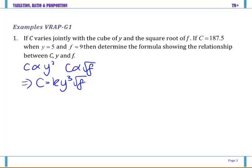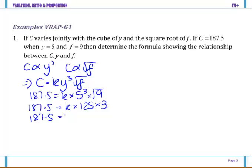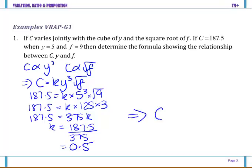Next part is c equals 187.5. So I have 187.5 equals k times y is 5, 5 cubed times square root of f is 9. So I have 187.5 equals k times 125 times 3. From here we can evaluate the 125 times 3 to be 375k. So that means divide both sides by that 375, and we get 187.5 divided by 375 is 0.5. So that means our formula is c equals 0.5 y cubed square root of f.